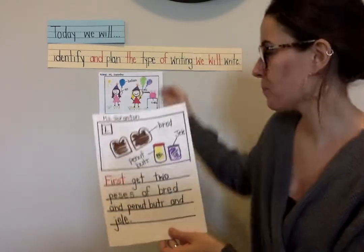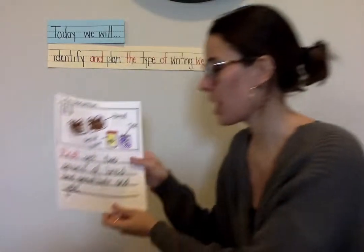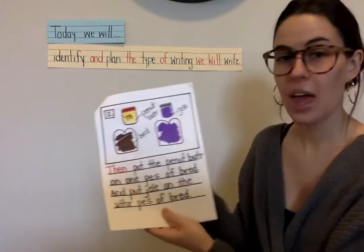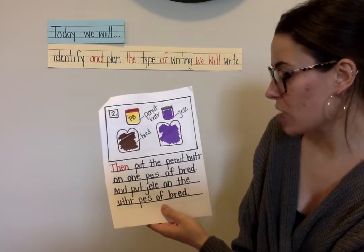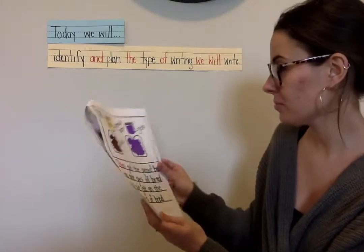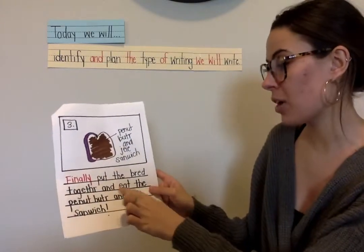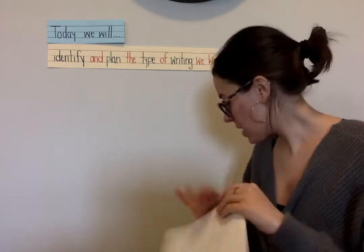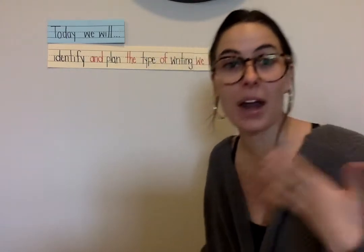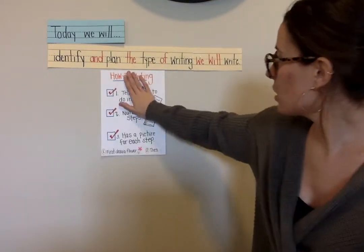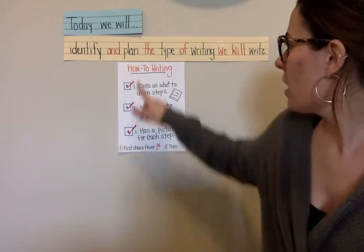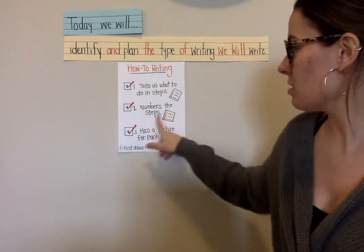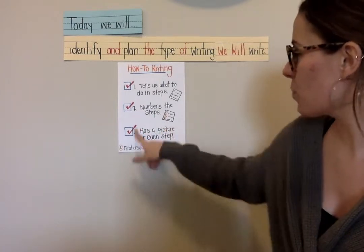Let me read it to you. First, get two pieces of bread and peanut butter and jelly. Then, put the peanut butter on one piece of bread and put jelly on the other piece of bread. Finally, put the bread together and eat the peanut butter and jelly sandwich. I made a little anchor chart to help us refresh our memory about how-to writing. In our how-to writing, there are three things that we need: it tells us what to do in steps, we number our steps, and it has a picture for each step.